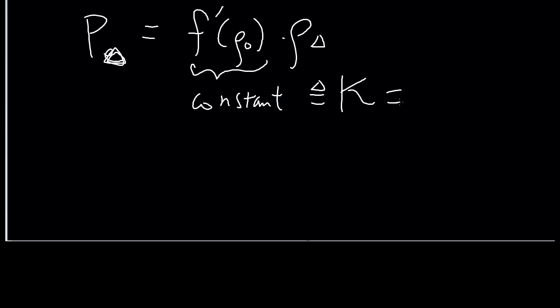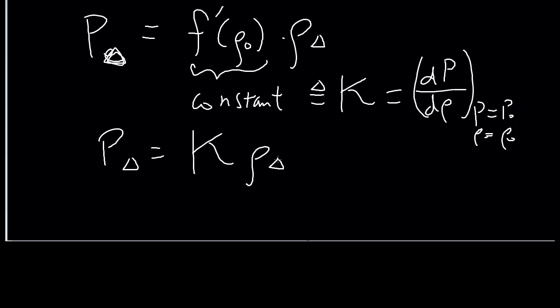And we'll define that constant to be K. To stress that once again, that's dP/d_rho when the pressure is equal to P_0 or when the rho is equal to rho naught. And that's the first step where we can say the little change in pressure is directly proportional to the little bit of change in density.